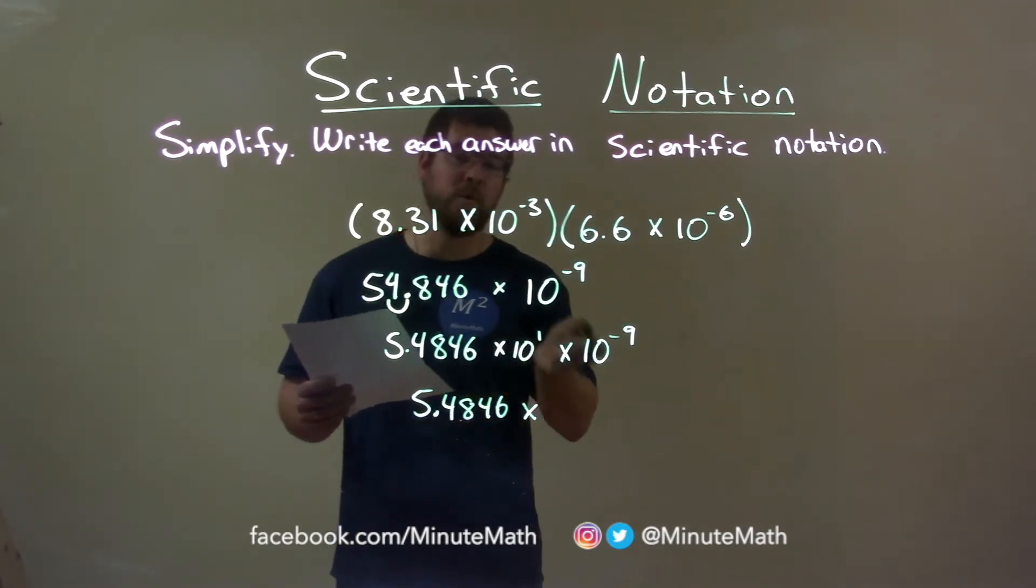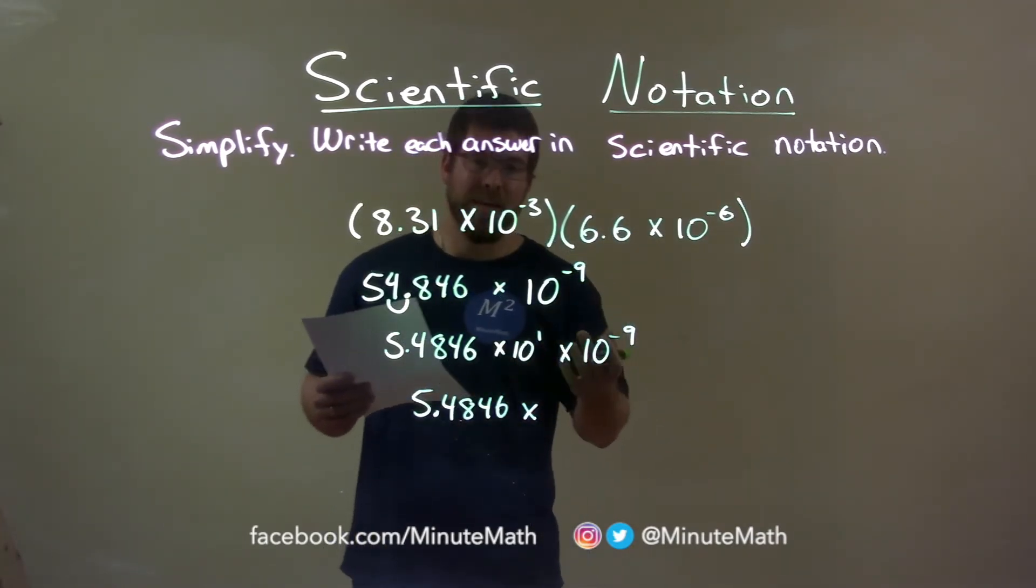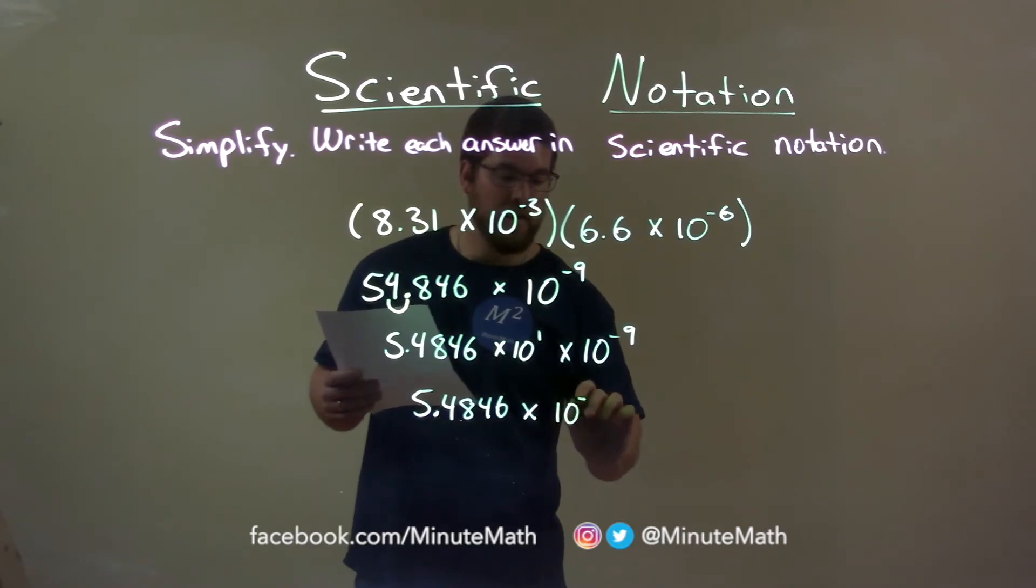We have the same base and they're being multiplied. 1 plus negative 9 equals negative 8. We have 10 to the negative eighth power.